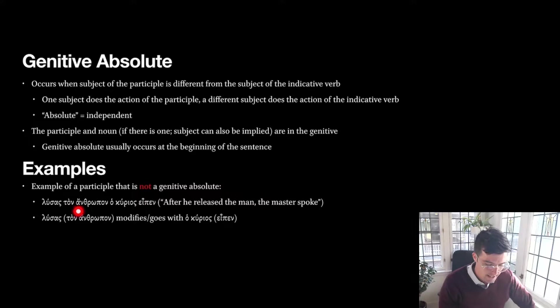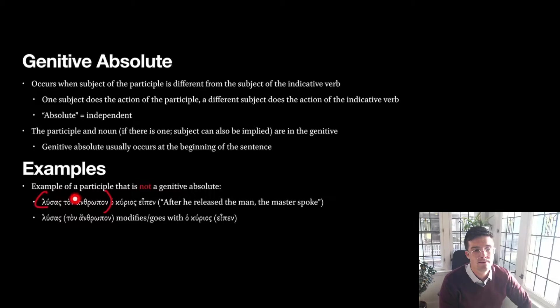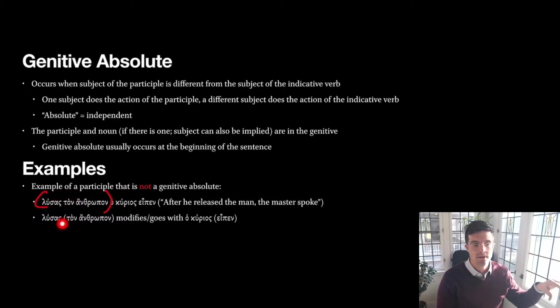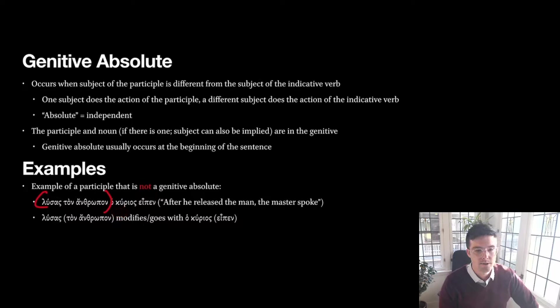Here's an example of what a genitive absolute is not: 'lusas ton anthrōpon ho kurios eipen' — 'after he released the man, the Lord spoke.' Notice 'lusas' matches 'ho kurios' — both nominative masculine singular. The one doing the action of the participle is the same one doing the action of the verb, namely the Lord. So it's not forced into a genitive absolute; 'lusas' modifies and goes with Lord and matches Lord.